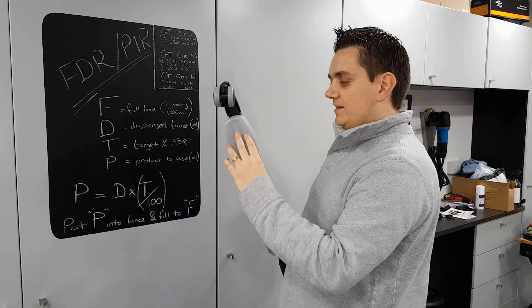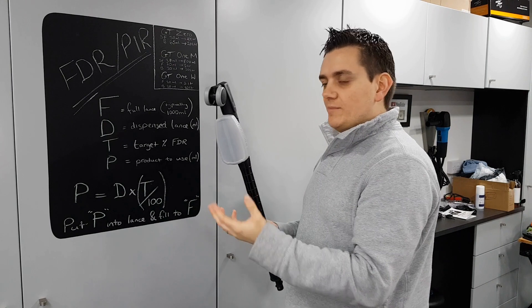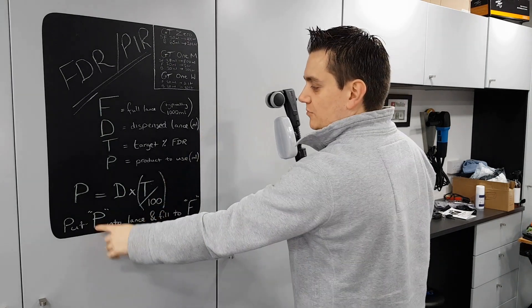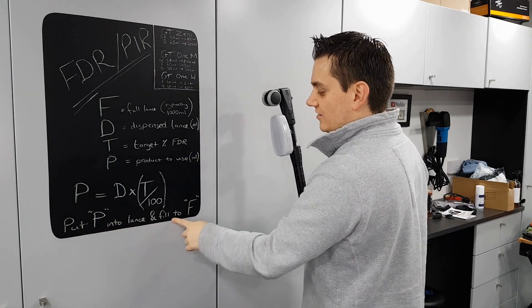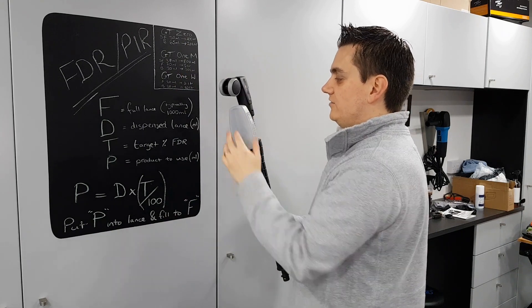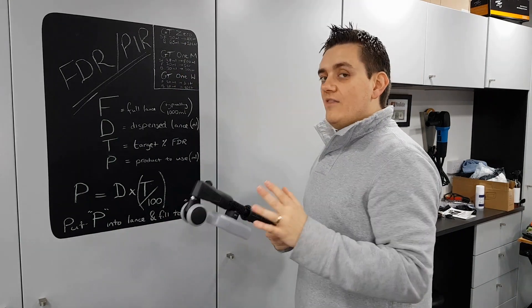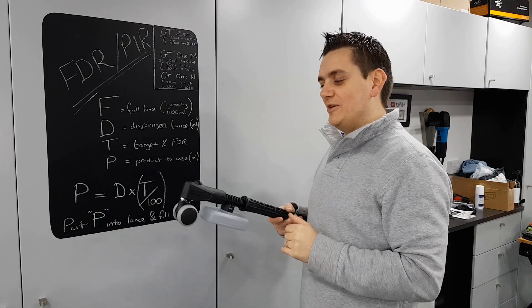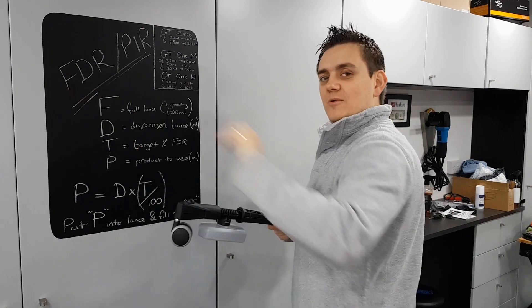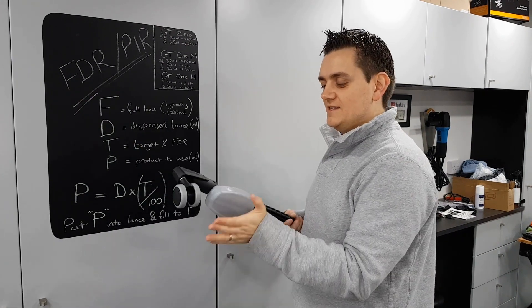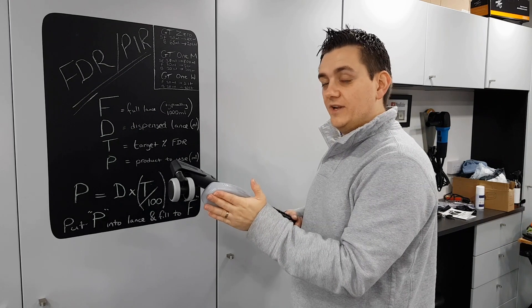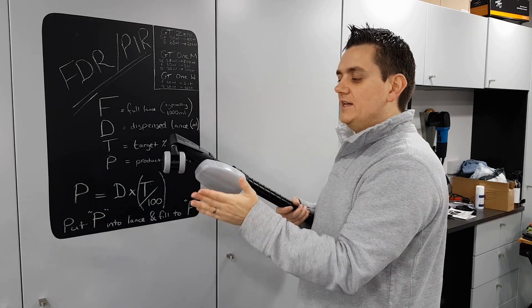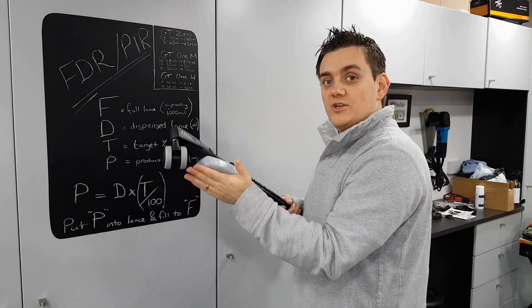You'll have a number in milliliters, let's say around about 100 mil. You'll put 100 mil in this, so P, put 100 mil into a lance and fill to F. So that's a full lance. You'll just top that up with water. Then hopefully if you've done all your maths right, when you jet wash this onto the car and dispense this onto the undercarriage or through your snow foam lance or whatever, you will hit your PIR ratio.